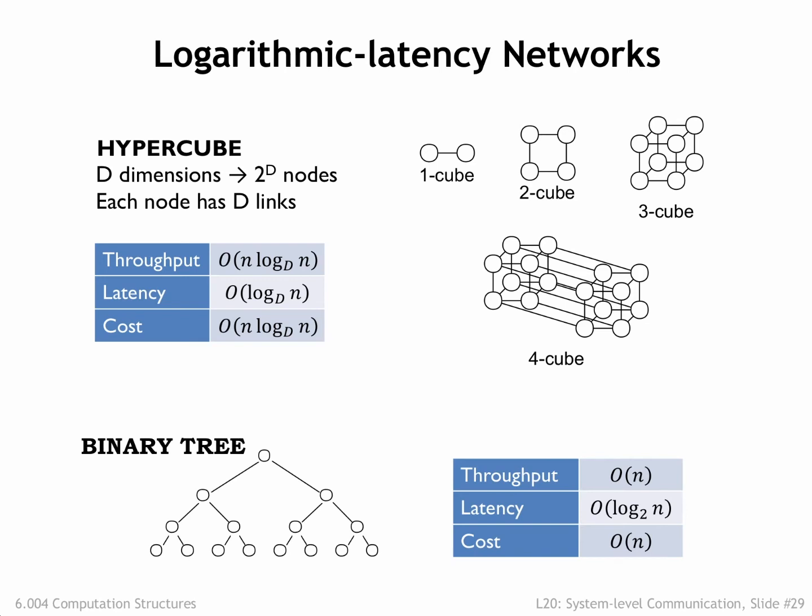Hypercube and tree networks offer logarithmic latencies, which for large n may be faster than mesh networks. The original CM1 Connection Machine, designed in the 80s, used a hypercube network to connect up to 65,536 very simple processors, each connected to 16 neighbors. Later generations incorporated smaller numbers of more sophisticated processors still connected by a hypercube. In the early 90s, the last generation of Connection Machines used a tree network, with the clever innovation that links towards the root of the tree had a higher message capacity.